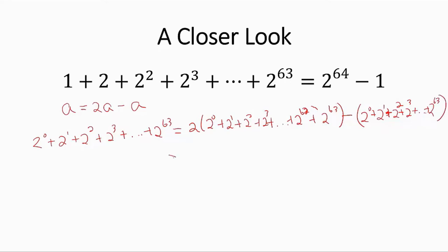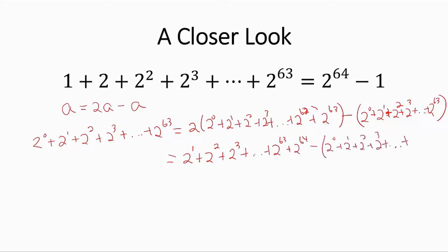When you carry out that multiplication and then take away the original sum, notice that you're subtracting those terms — this cancels with that one, these two cancel out, these two cancel out, and so on. We are left with only two terms: 2 to the power of 64, minus 1. Thank you.